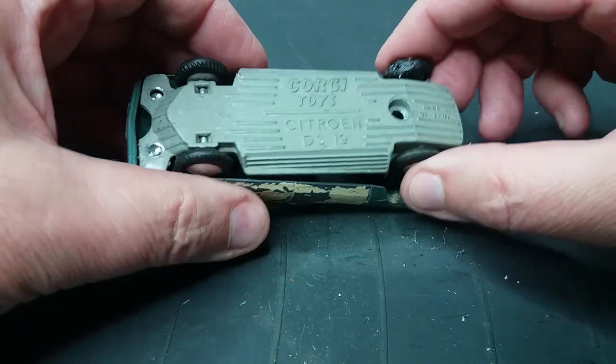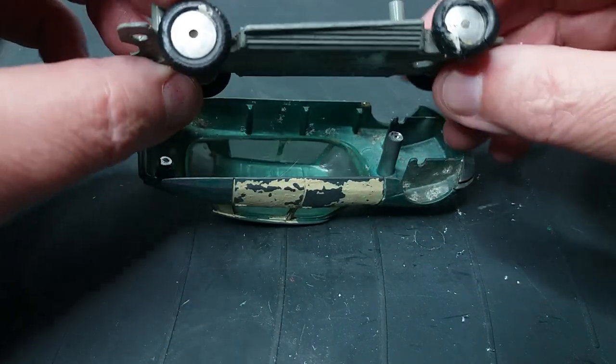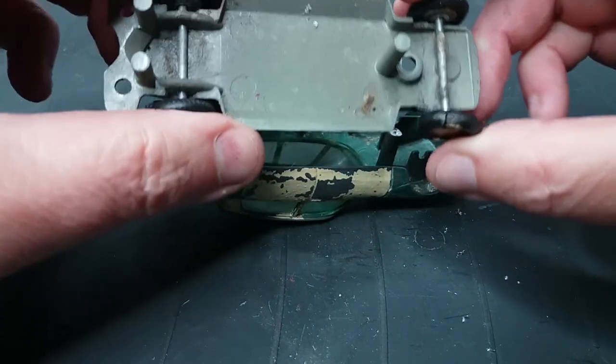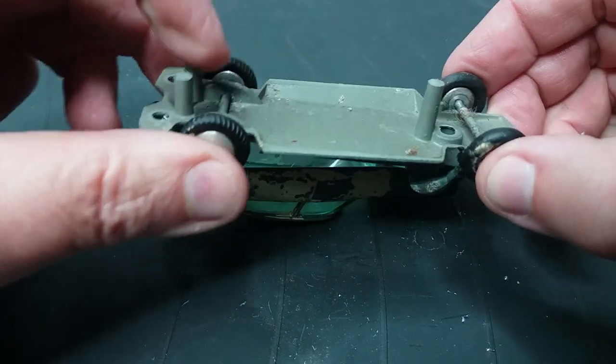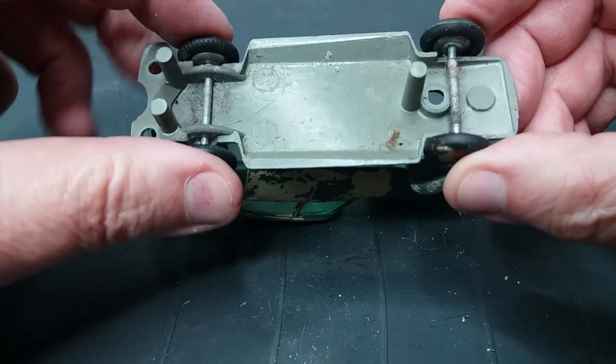Now with the car apart you'll see that it's actually very simple. There's no suspension, there's no interior, so there really is just the base plate, the wheels, axles, the upper body and the glass and that's it really. It's very simple.